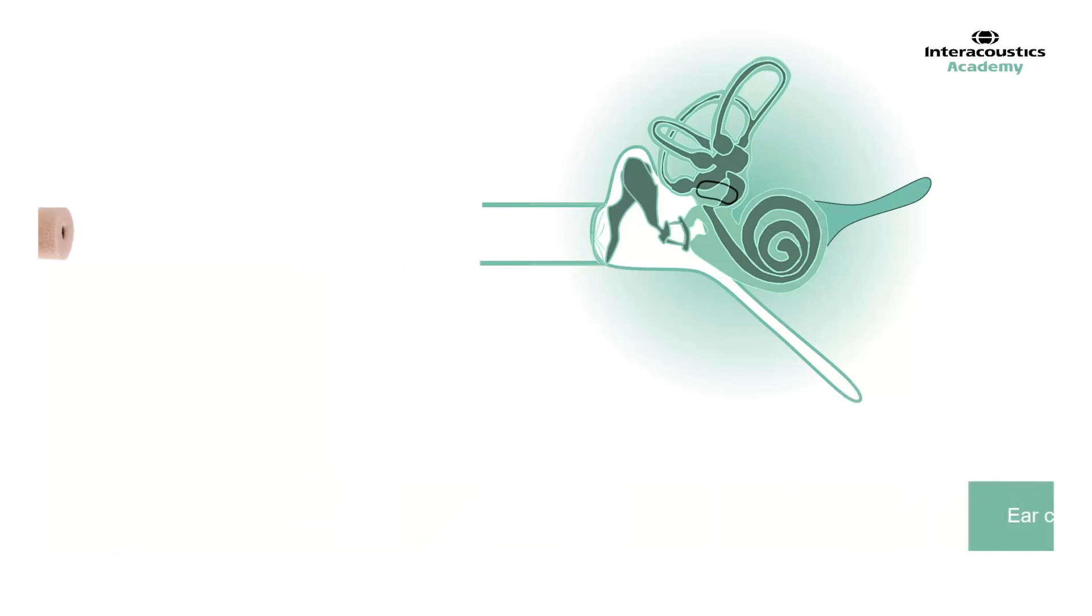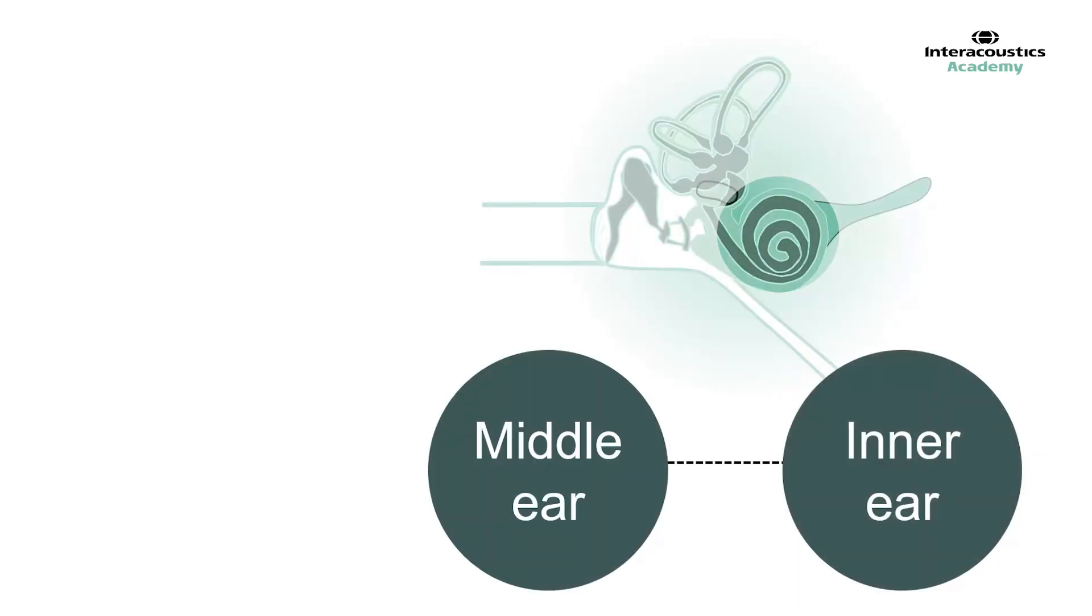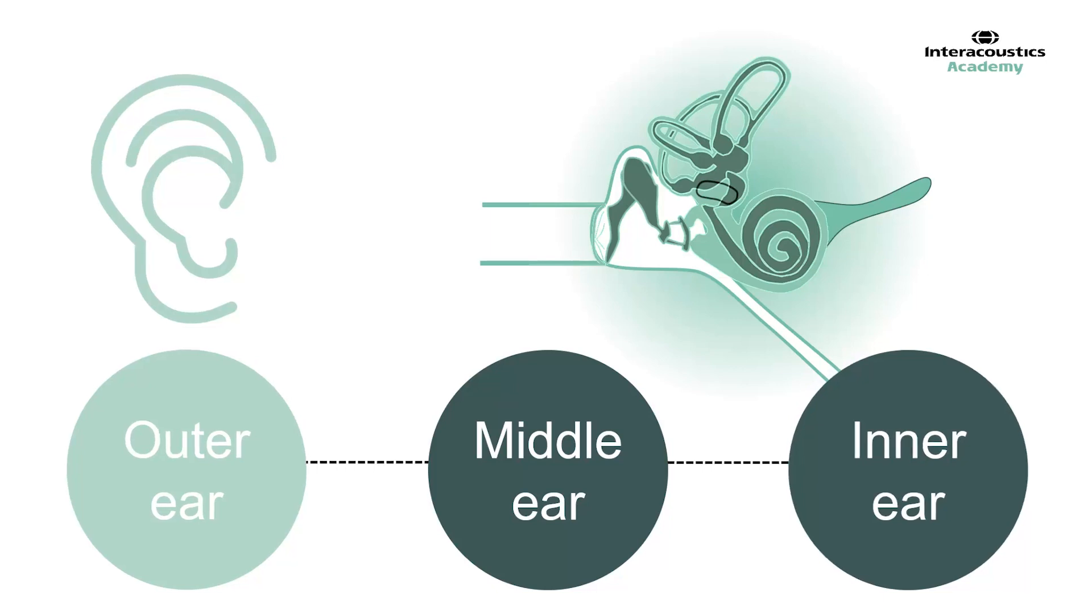Using pure tone audiometry or auditory brainstem response testing, it is possible to combine the components of the auditory pathway into two separate areas: the middle ear and the inner ear. There is also the outer ear to be aware of, but typically any abnormalities relating to the outer ear are identified by otoscopic inspection rather than audiometry or ABR testing.